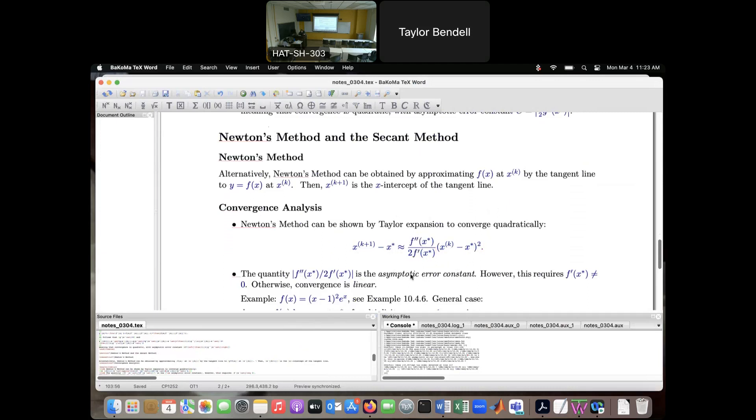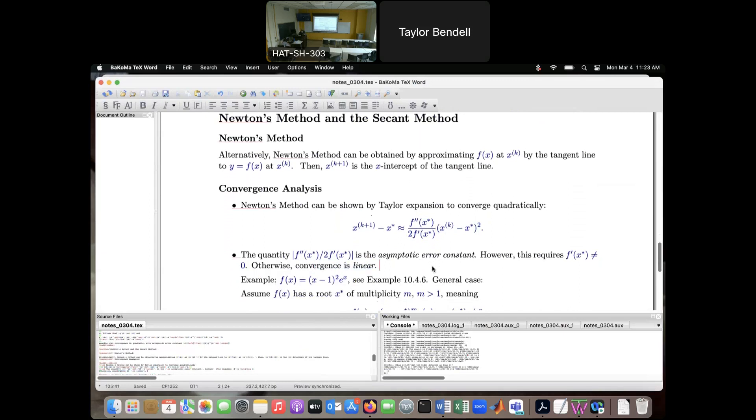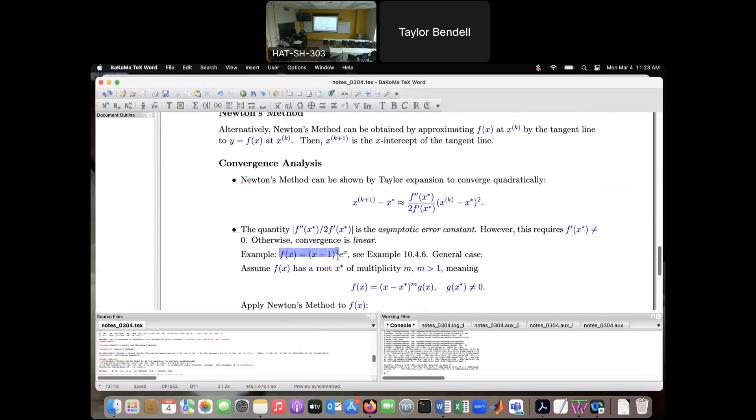But only valid if f prime at the root is non-zero, which is what we have been assuming. If it is zero, in other words, if f has a root that's not a simple root, or like, if it's a double root, then the convergence slows down to linear. The method can still converge, it's just slower. And so I have an example in the text where I have this function, x minus 1 squared times e to the x. So this function has a double root at x equals 1. So f is zero there, f prime is also zero there. And it's worked out in this example that the convergence is linear, and the asymptotic error constant is equal to one half.